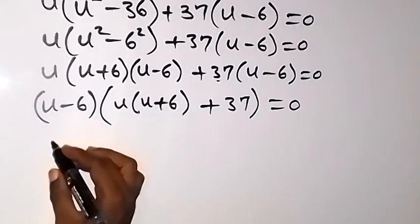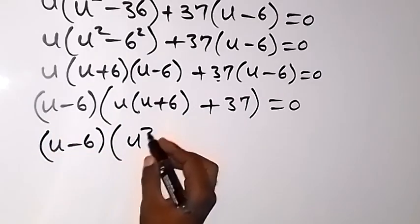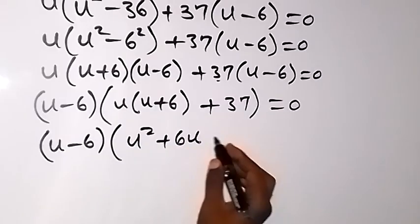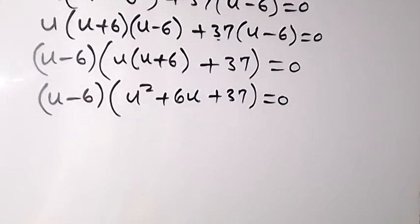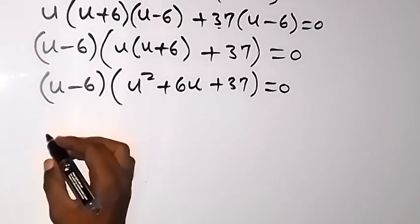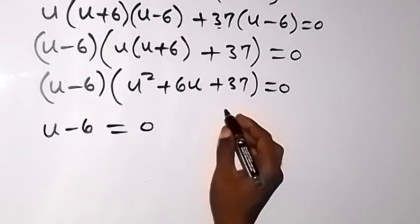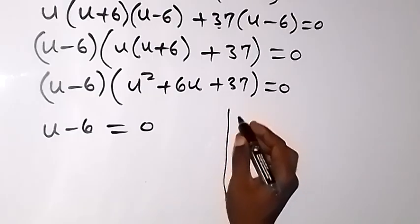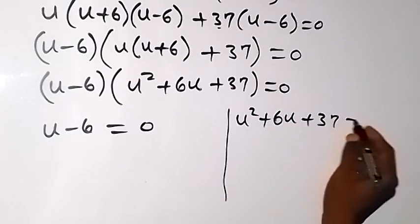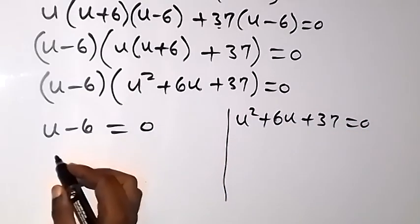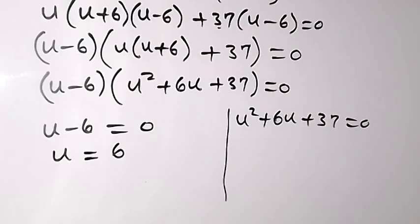We have (u minus 6)(u² plus 6u plus 37) equals 0, giving two possible cases. Case one: u minus 6 equals 0, which gives u equals 6. Case two: u² plus 6u plus 37 equals 0. We check whether this gives a real solution.